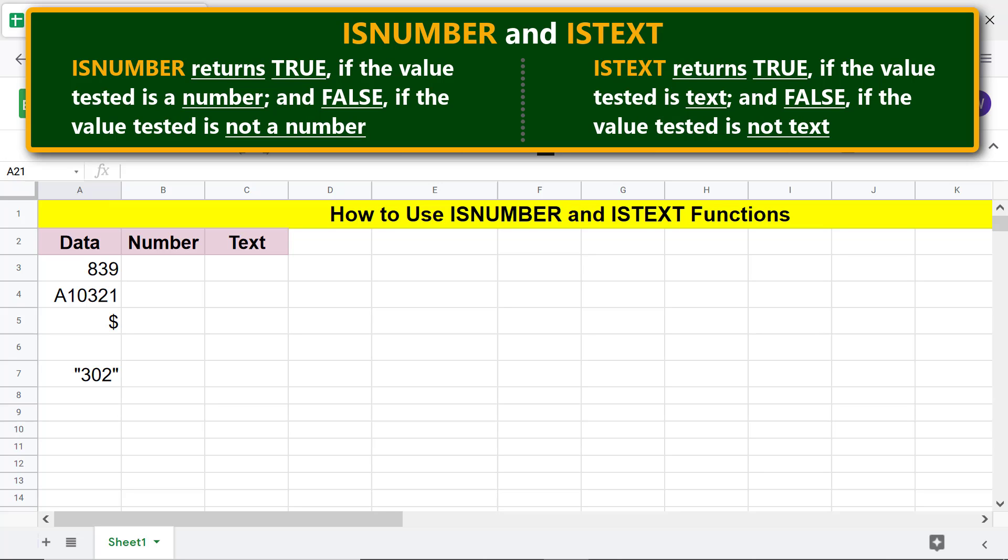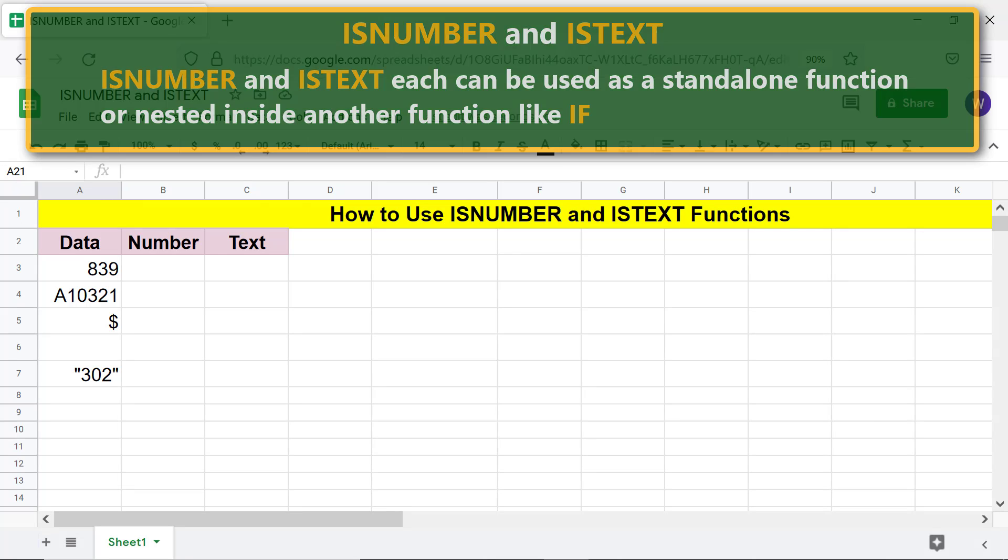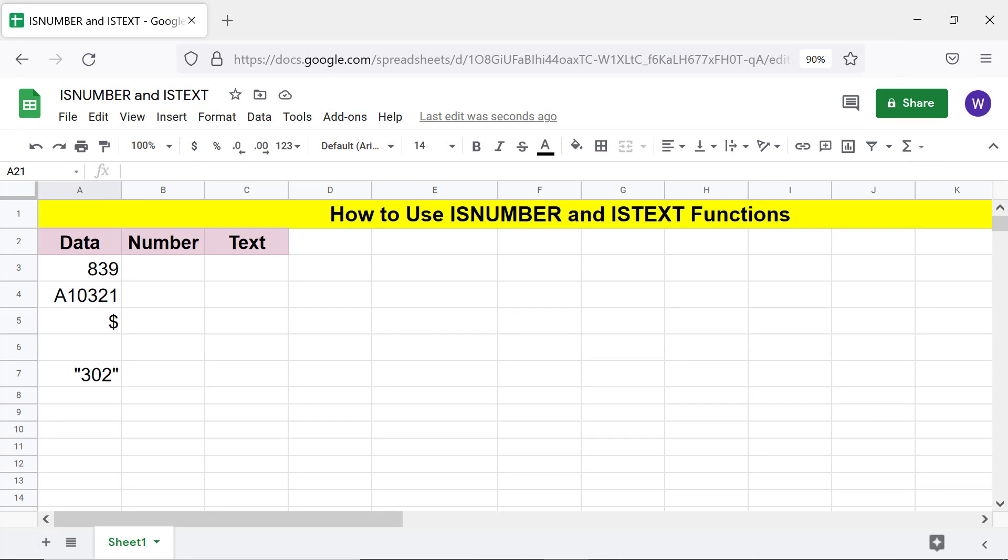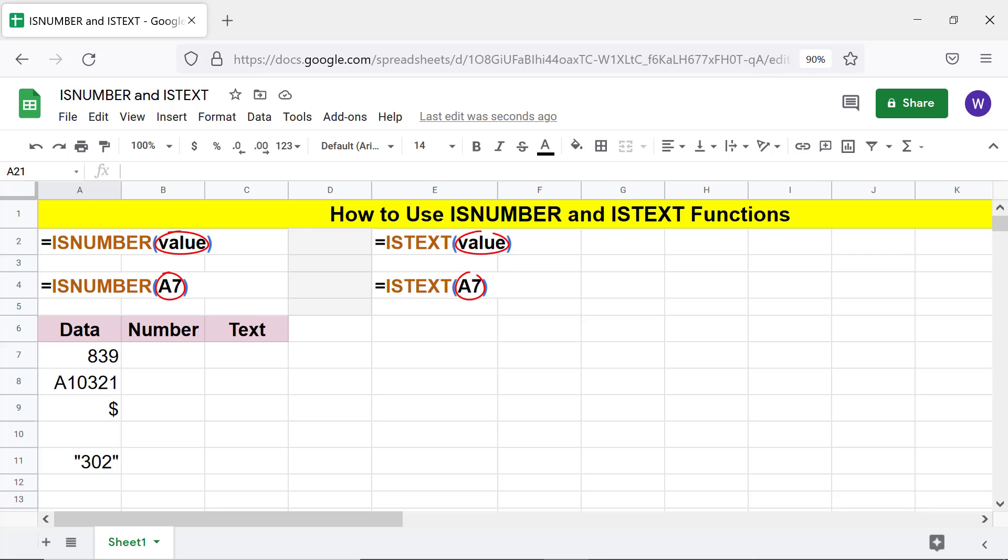ISNUMBER and ISTEXT can each be used as a standalone function or nested inside another function like IF. Here are the ISNUMBER and ISTEXT function formulas. Let's look at an example for each.